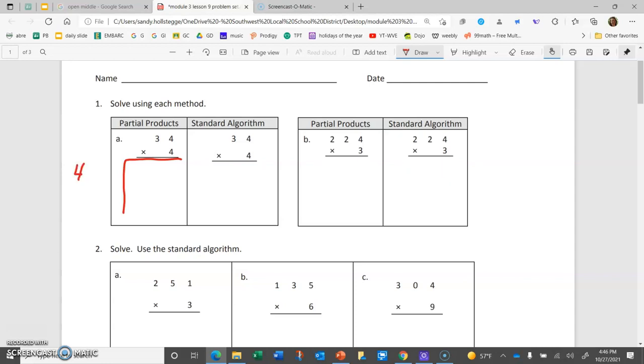So I'm going to do 4 times the 4, which I know is 16. And I'm going to be doing 4 times that 3, that's really a 30. So 4 times 30, 4 times 3 is 12, with my 0 makes 120. When I go ahead and add those partial products together, I get a 6 and a 3 and a 1.